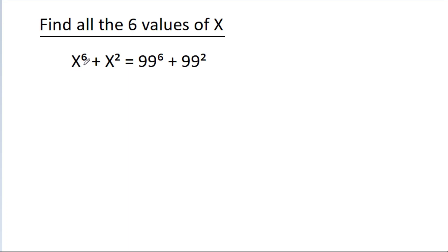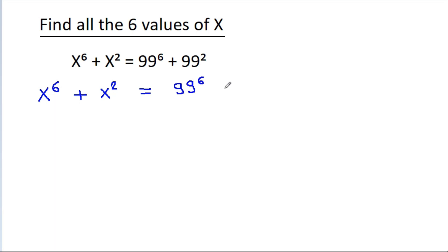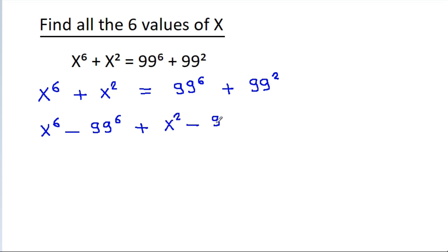In this video, we have given that x⁶ plus x² is equal to 99⁶ plus 99². And we have to find only 6 values of x. So, we have x⁶ plus x² equals 99⁶ plus 99², and it is x⁶ minus 99⁶ plus x² minus 99² is equal to 0.